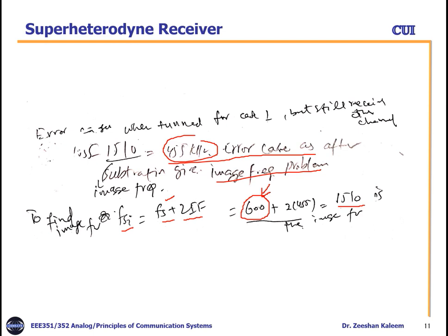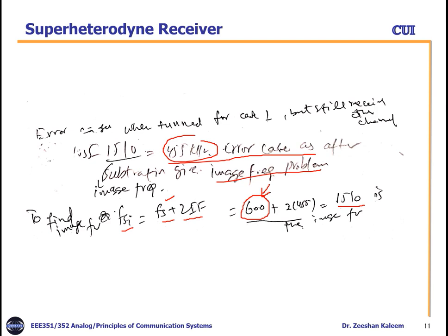This covers the heterodyne receiver working procedure and the image frequency problem, and how to avoid it. This concludes this chapter. For the next chapter we will discuss further topics. Thank you for listening. A separate online session for question and answer will be held — the exact date and time will be communicated later.